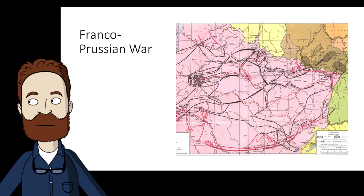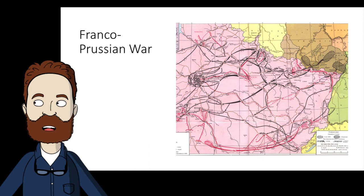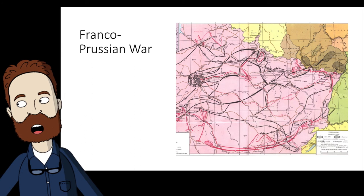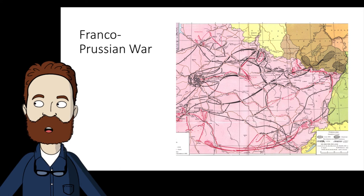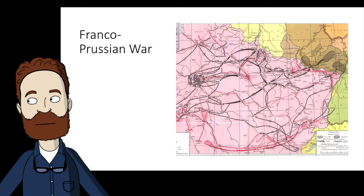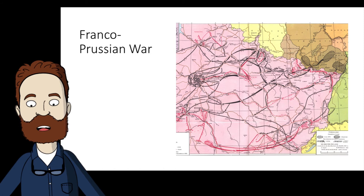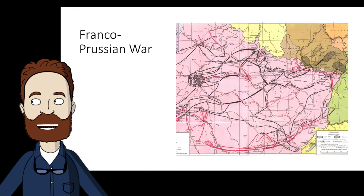He released an altered telegram to infer that King William had insulted the French ambassador. When the French people learned of it, the whole nation was in an uproar. When Napoleon III's ministers asked for a declaration of war, there were only ten votes against it. France had long wanted a war with Prussia, and no sooner had the struggle begun than the southern German states rallied to the side of Prussia, believing that Prussia was the victim of aggression.